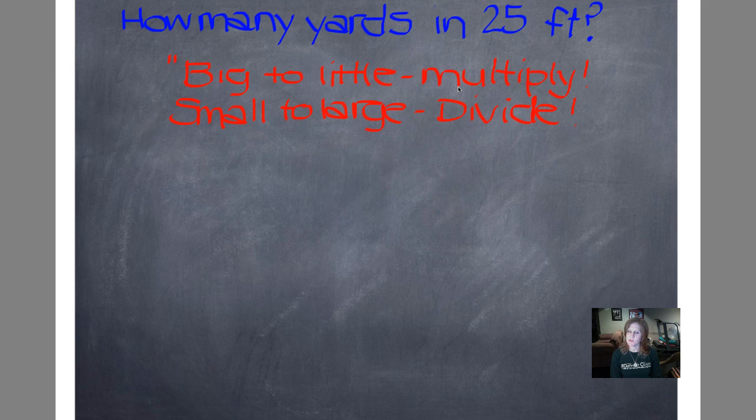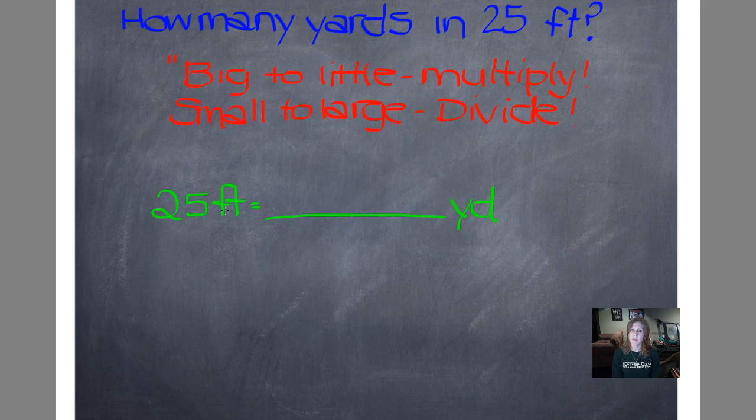So I've written the hint there, big to little, multiply, small to large, divide. And I've also written the question. It says, how many yards are in 25 feet? So we're converting from feet to yards. And we know how many feet we have. So we always write what we know first. 25 feet. And if you notice, I didn't put a period after that. The only unit of measurement that you put a period after the abbreviation is inches so that you don't get it mixed up with the word i-n. So I draw a line and I want to know how many yards. And also, even though you use plural, you still don't write an S on the end of it. We just say yards when we see Y-D, yards. 25 feet equals how many yards?